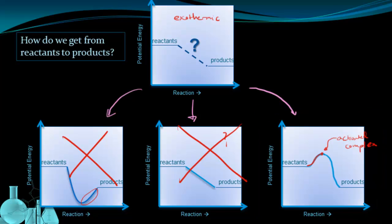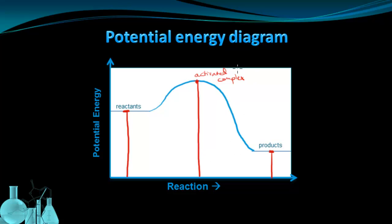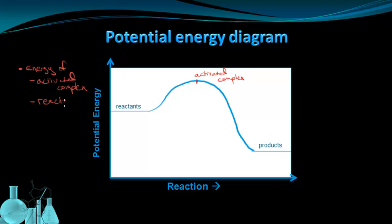Let's look at this in more detail and label some important parts. The activated complex is right here at the top, at the peak of this curve. This curve shows three quantities of interest: from this point to the bottom shows the total energy of the reactants; from this point to the bottom shows the total energy of the products; and from the highest point — the activated complex — to the bottom shows the total energy of the activated complex.